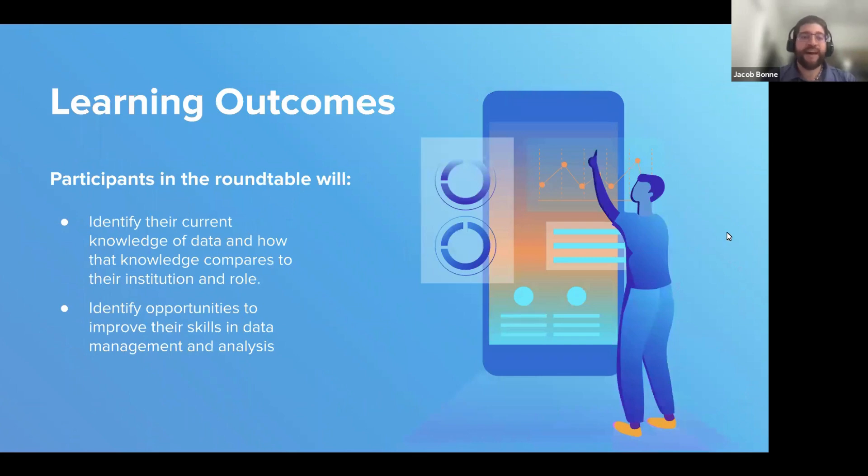The learning outcomes for today are really focused around knowledge of data and how your knowledge compares to your institution and role. We might have some folks from institutional research on the call with us, certainly career services, alumni relations, and other units around campus. I recognize that your usage of data might be a little bit different depending on your role and position. Our conversation today will be pretty high level and really reflective to allow you to think about how you are leveraging this data and what opportunities there are to improve your knowledge or your unit's knowledge and usage of data.